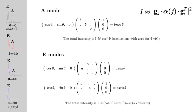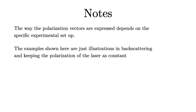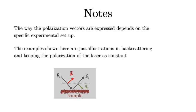If you understand this, that's all you need to know. What I'm suggesting for the rest of this screencast, though, is to provide an interpretation that allows for more intuition as to what happens, also in a specific setup I want to talk about. The way the polarization vectors are expressed depends on a specific experimental setup. Here I use Gi as a constant, Gs is changing, but those can depend on what you decide to do experimentally. These are illustrations of backscattering keeping the polarization of the laser constant, but in general the setup is not necessarily backscattering — it can be more complicated. It's all about solving this equation.